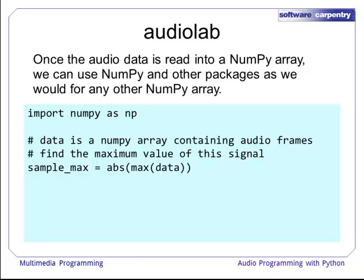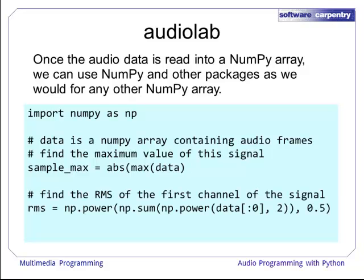So abs(max(data)) gives us the maximum of the array holding the audio frames. If we want to find the RMS — the root mean square — of the first channel of the signal, we would take only the first column of the array, square it, find the sum of all those values, and then find the square root of that sum.